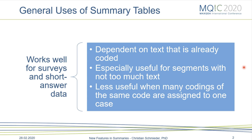If you have larger segments of text that are coded, it's oftentimes much better to use code memos. Summary tables are also less useful when you have many or very many codings of the same code assigned to one case. So if I have, for example, one interview in which I have coded 75 different segments with one code, it would probably be better to use memos or other writing functions because the window of retrieved segments in your summary grid will just be too long — you'd have to do a lot of scrolling or you'd have to have a gigantic screen.